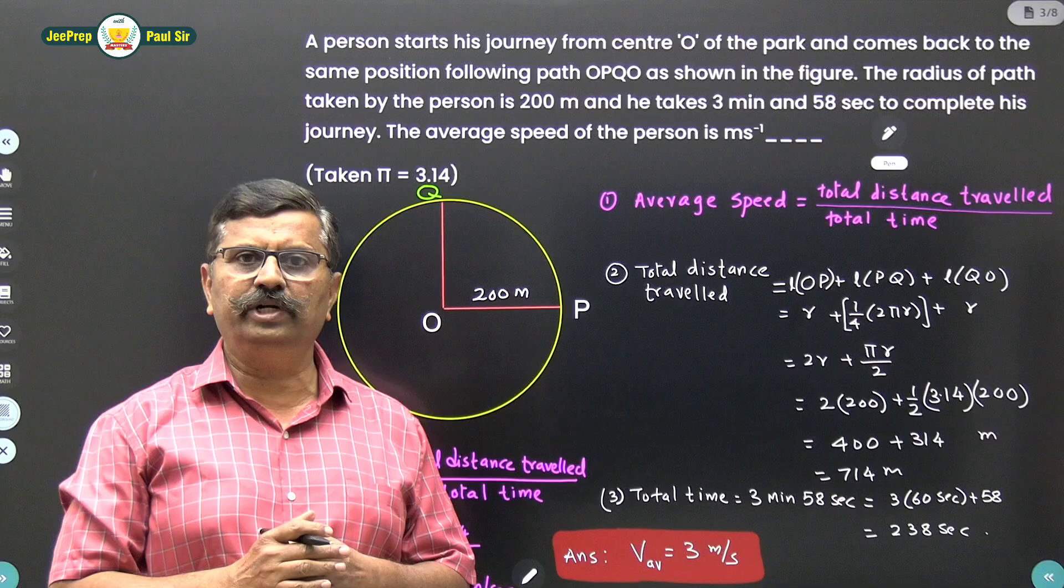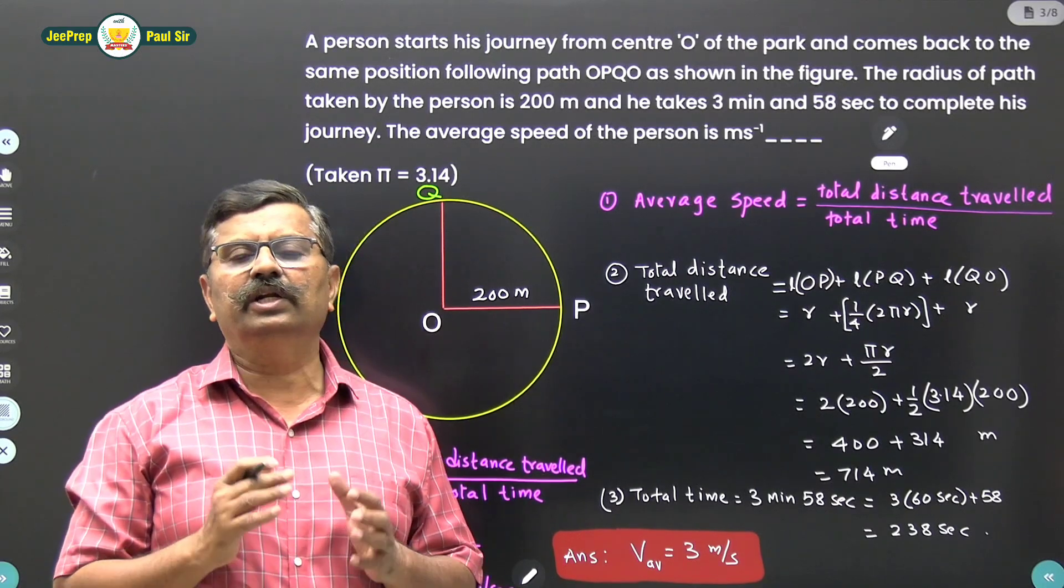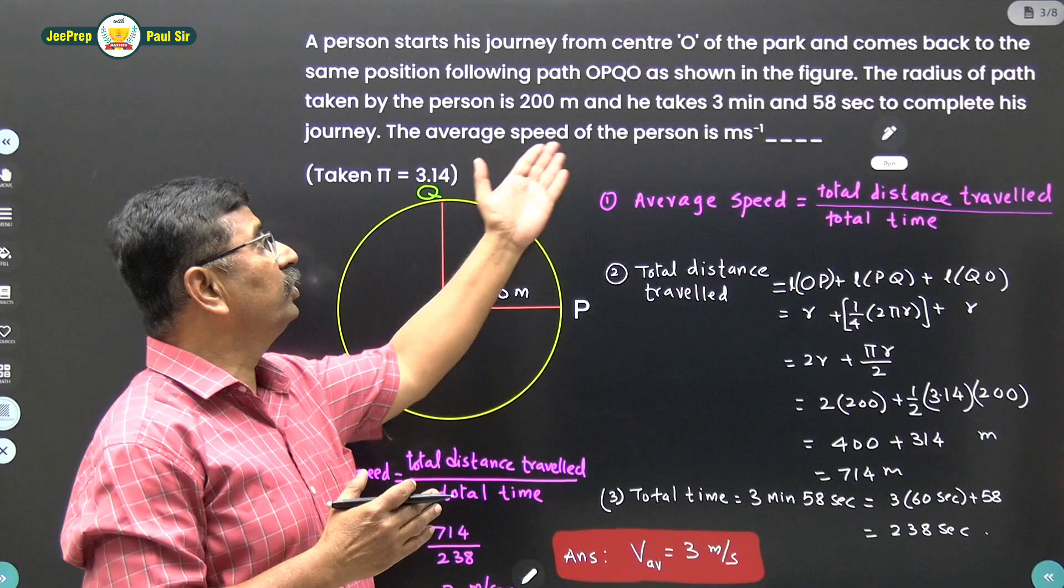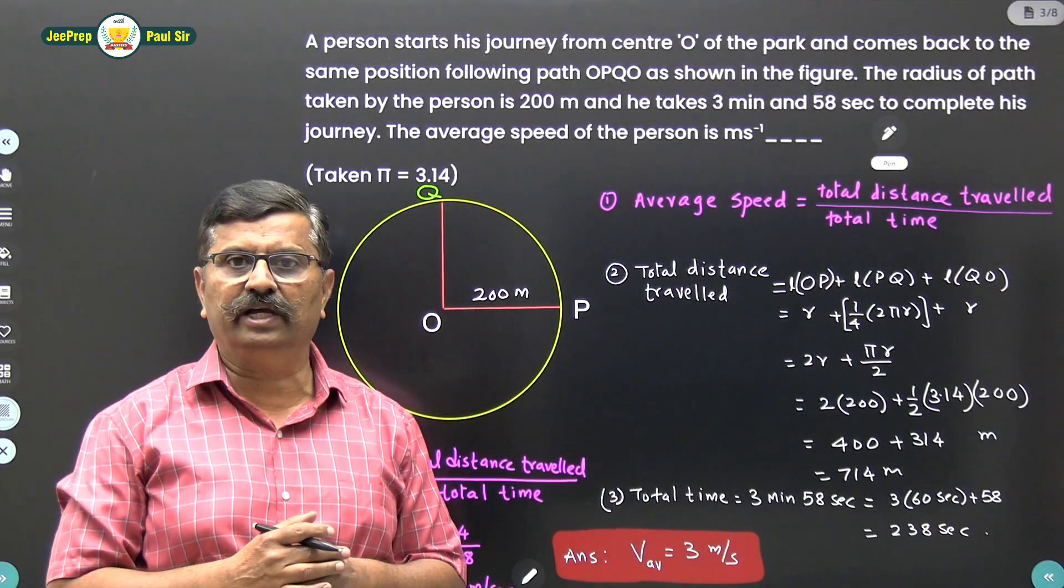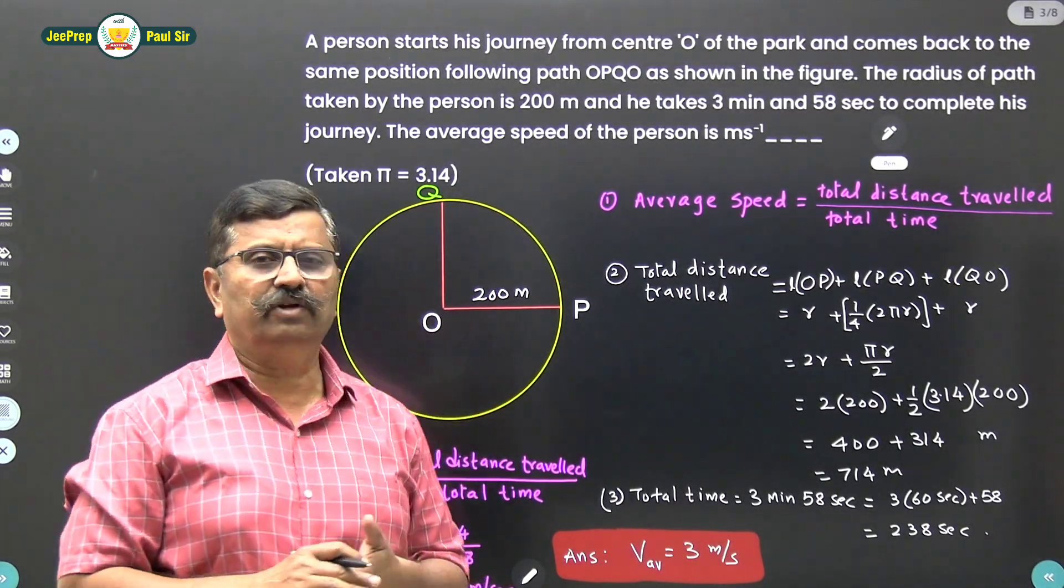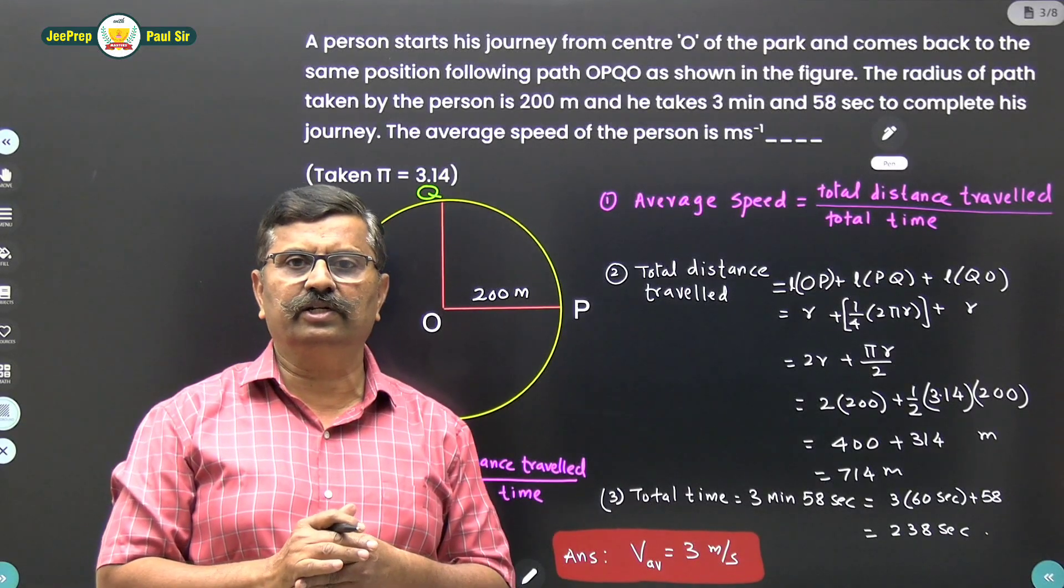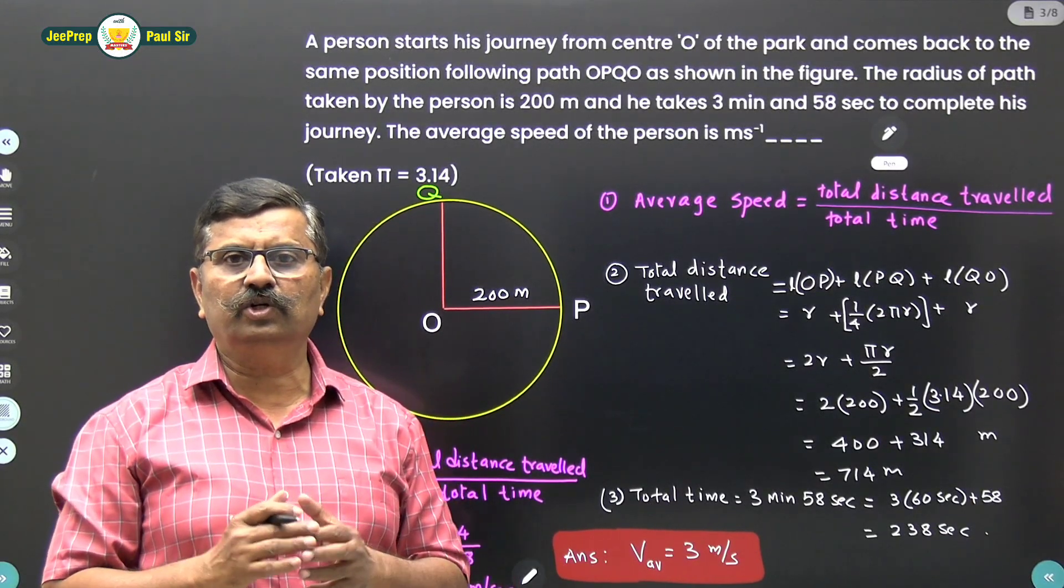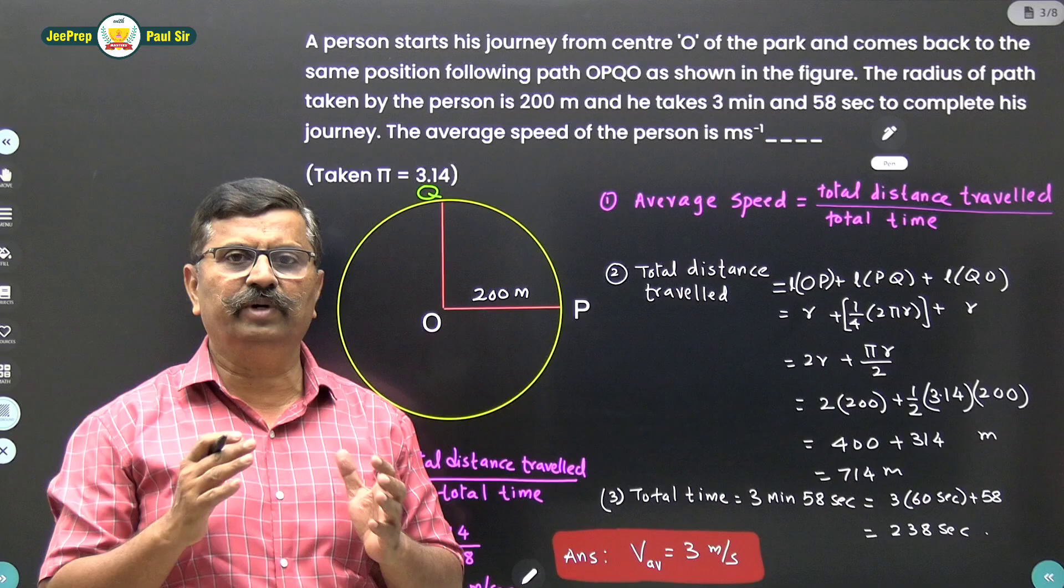The formula for the average speed is the total distance traveled divided by total time taken. They have given us the total time taken, that is 3 minutes and 58 seconds, which we have to convert into seconds later on. Now first we will find out the total distance covered by that person.